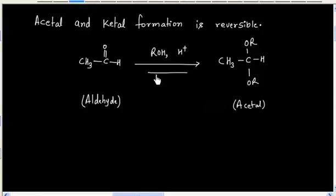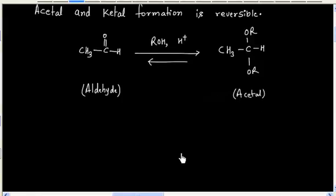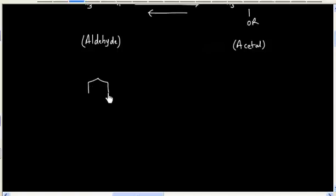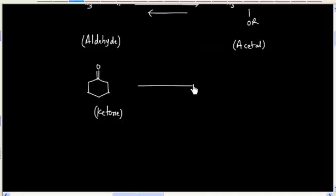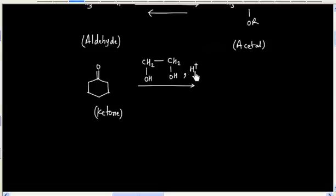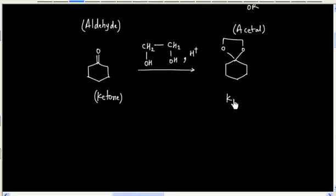This reaction is reversible. Similarly, we can have a ketone. This can react with alcohol in acidic medium to form ketal. This reaction is also reversible.